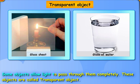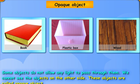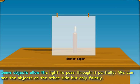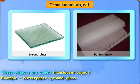Some objects allow light to pass through them completely. These objects are called transparent objects. Some objects do not allow light to pass through them. We cannot see the objects on the other side. These objects are called opaque objects. Some objects allow light to pass through them partially. We can see the objects on the other side but only faintly. These objects are called translucent objects.